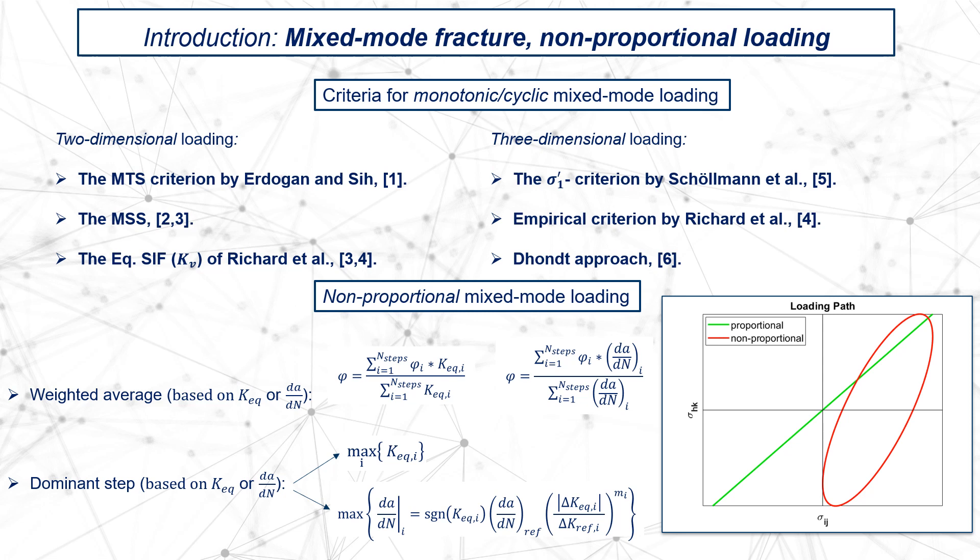The general case of non-proportional loading is represented by phase-shifting mixed mode loading, which was our focus of investigation. The procedure to determine a propagation deflection angle for the complete mission is to subdivide the mission in several loading steps. Then, starting from the individual deflection angles calculated for each loading step, these can be used to obtain a unique deflection angle associated with the whole mission.